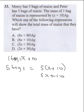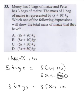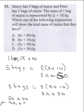5 times (x plus 10) gives 5x plus 50. Peter has 3 bags, which is 3 times (x plus 10), giving 3x plus 30. Summing 5x plus 50 and 3x plus 30 gives 8x plus 80. That is the final answer.